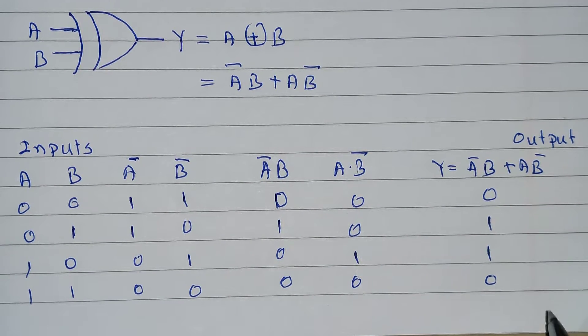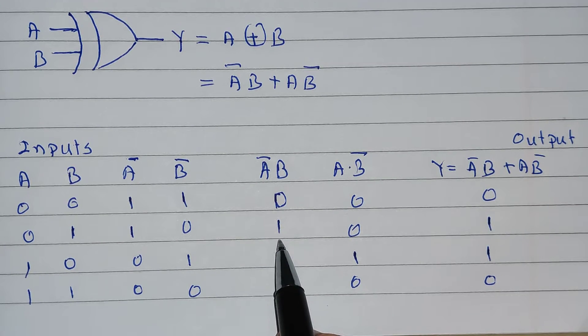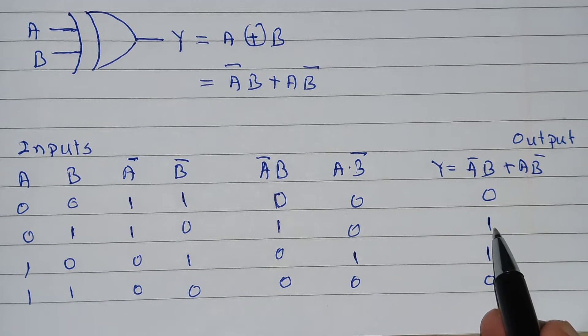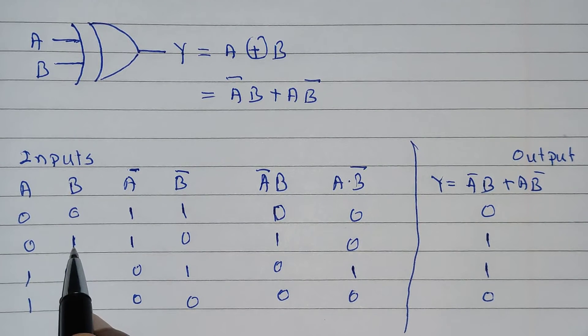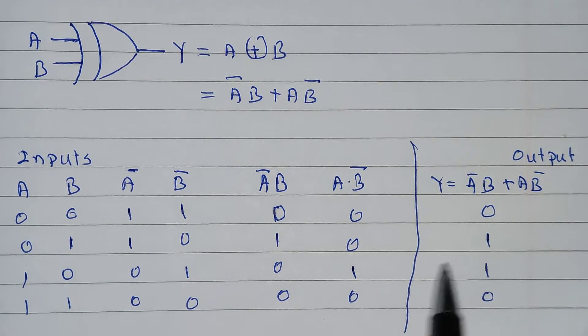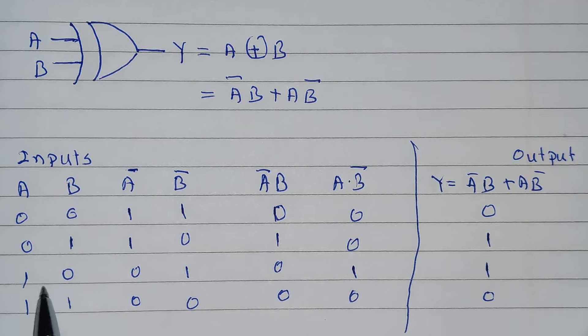Now, pay attention very carefully. When inputs are exclusive, when only one input is there, at that time output is generated. 1 0, exclusive input is there. Output is equal to 1.